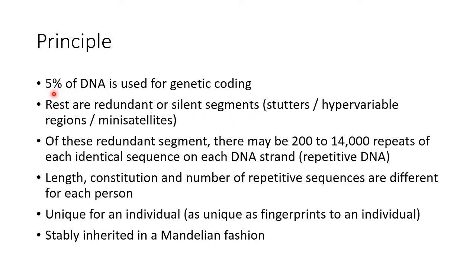Now let us discuss the principle of DNA fingerprinting. Only about 5% of DNA is used for genetic coding. The rest 95% of DNA are redundant or silent segments. They are also known as stutters, hypervariable regions, or mini-satellites. Of these redundant segments, there may be 200 to 14,000 repeats of each identical sequence on each DNA strand, which is called repetitive DNA or variable number tandem repeats.